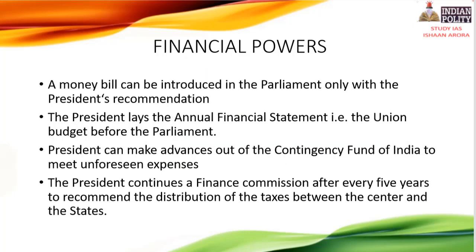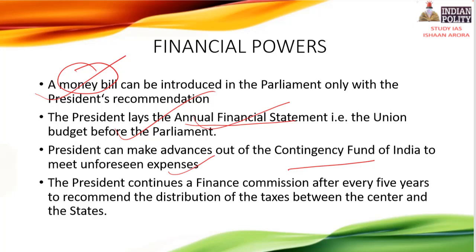For financial powers, money bills require the prior permission of the President to be introduced, as they involve expenditure from the Consolidated Fund of India. The President causes the annual financial statement — also known as the budget — to be laid before Parliament. The President can also make advances from the Contingency Fund of India to meet unforeseen expenses. The President also constitutes a Finance Commission every five years to recommend the distribution of taxes between the centre and the states.